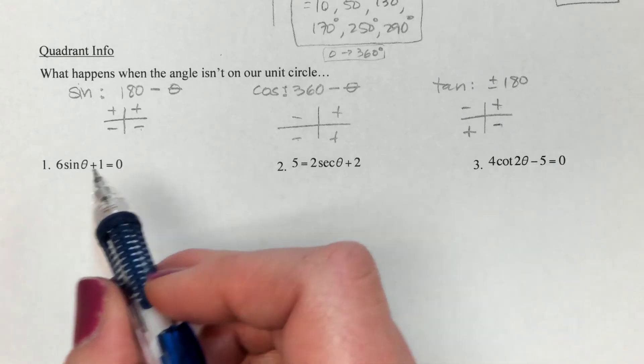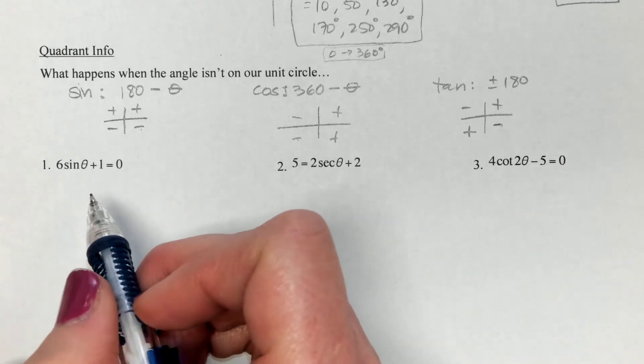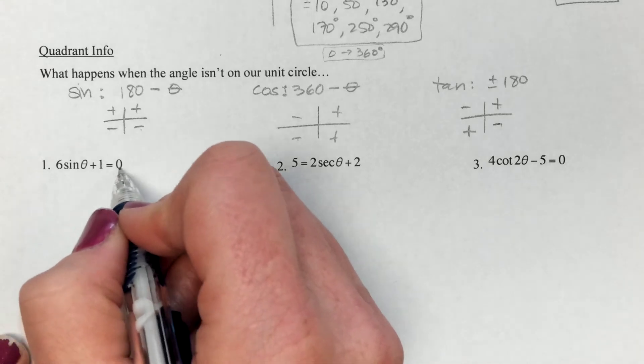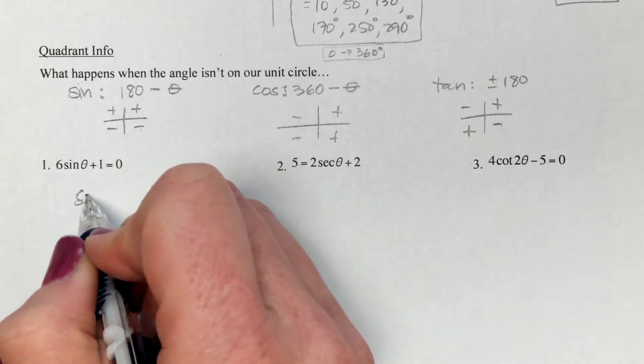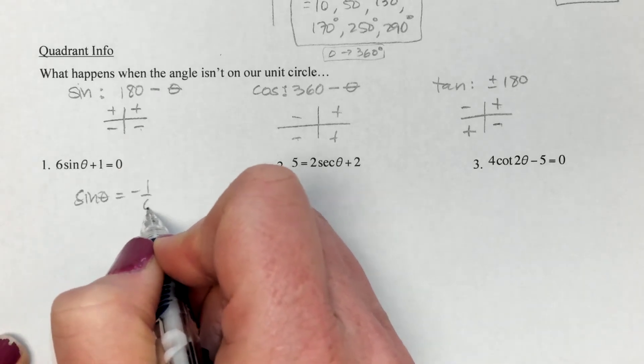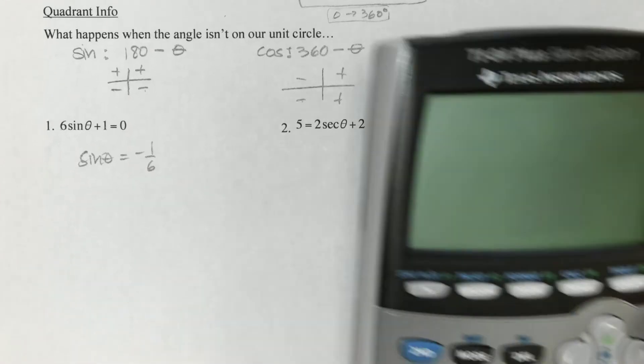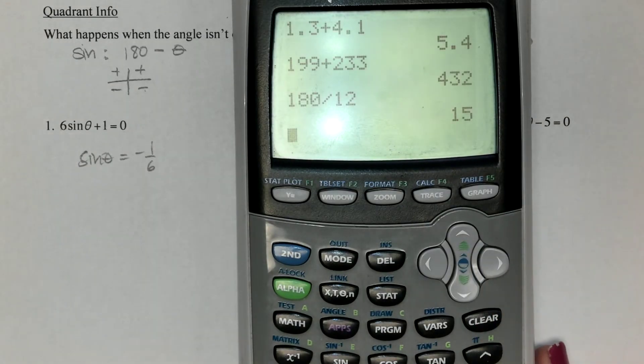The first one says 6sinθ plus 1. I'm first going to minus the 1, divide by 6. So I've got sinθ equals negative 1/6. That's not in my circle. You're right, it isn't. So let's do it on the calculator.